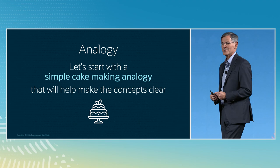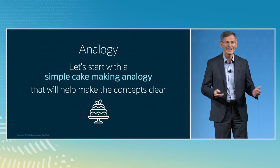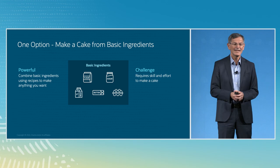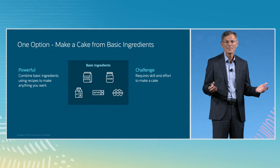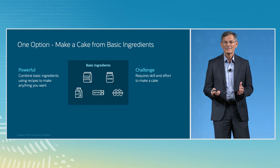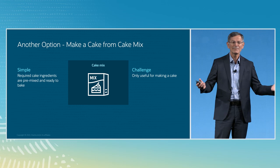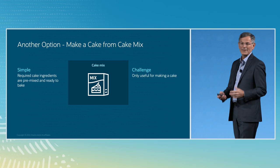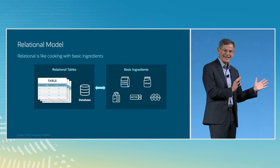I'm going to start with a simple analogy to make the concepts a little clearer — an analogy of making a cake. There are really two strategies. One is you make a cake from basic ingredients. The nice thing is you can make anything you want with basic ingredients; all you need is the recipe. The bad part is it requires some skill and effort. The second way is you start with something like a cake mix, where it's very simple because all the ingredients are pre-mixed and all you have to do is bake it. The downside is you can only use it to make a cake.